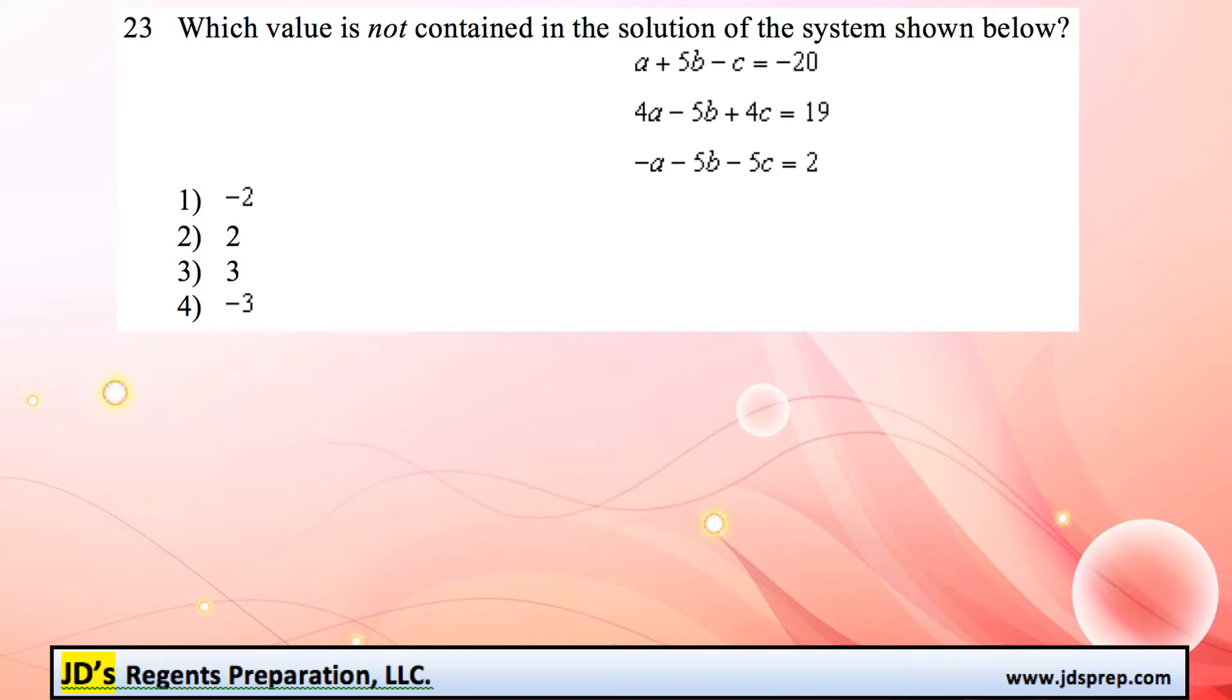We're going to start by looking for two of these equations that we can add or subtract together to eliminate a variable. If you notice the first and third equations, if we add them together, both the a variable would cancel out and the b variables would cancel out. Which is going to be super useful because then we'll be only left with an equation with one variable, c, and we can solve it.